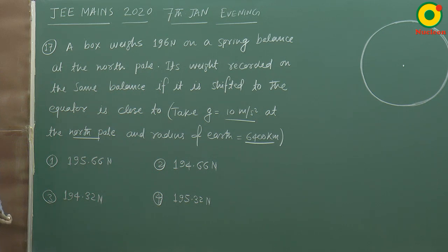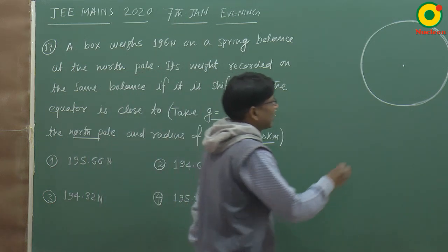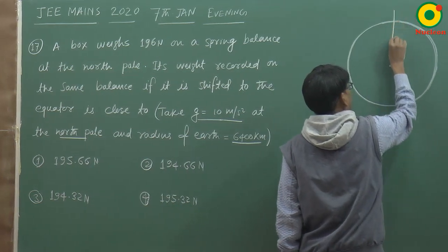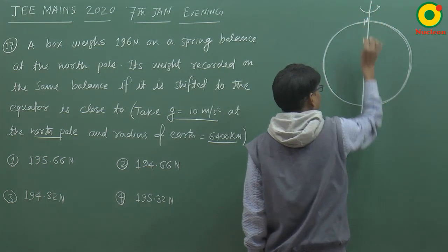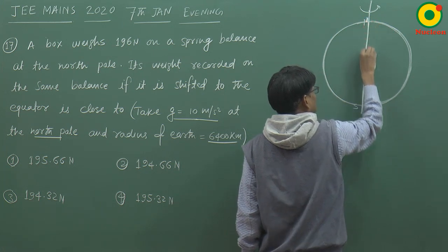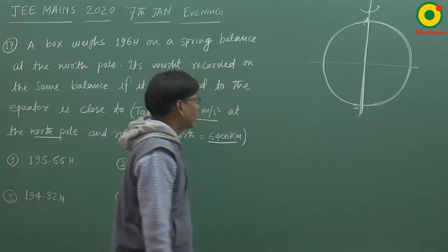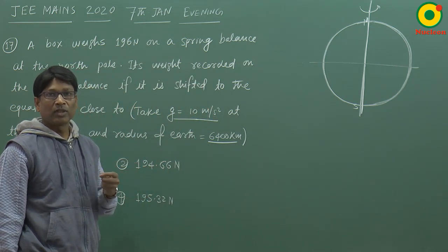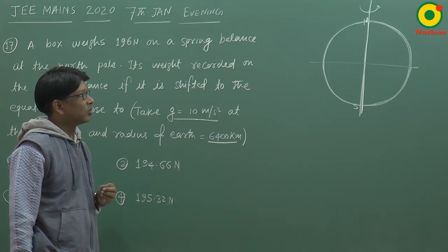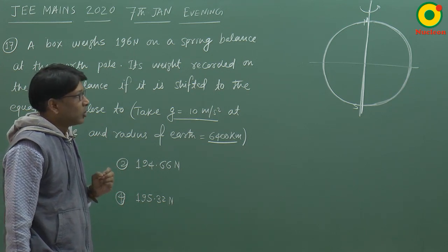अगर Earth को हम sphere मानते हैं तो mg का value उतना ही होना चाहिए, लेकिन Earth अपने axis के about rotate करता रहता है। Rotation की वजह से किसी भी balance से reading लेंगे — चाहे spring balance हो या weighing machine — actual weight नहीं बताता, थोड़ा different आता है।